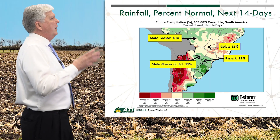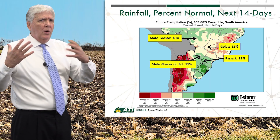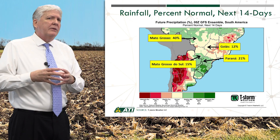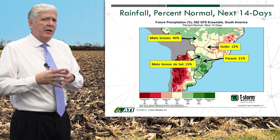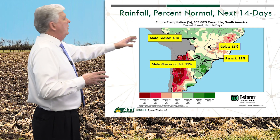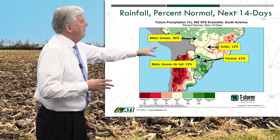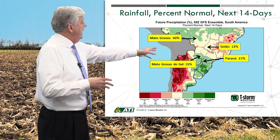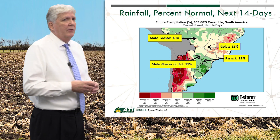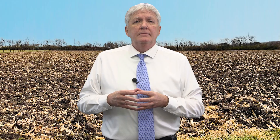Looking at the forecast for the next 14 days, we're really seeing some good rainfall — average rainfall, not too much — across the central growing region. A little bit more rainfall is expected across the south, but that's the area that could still benefit from it.